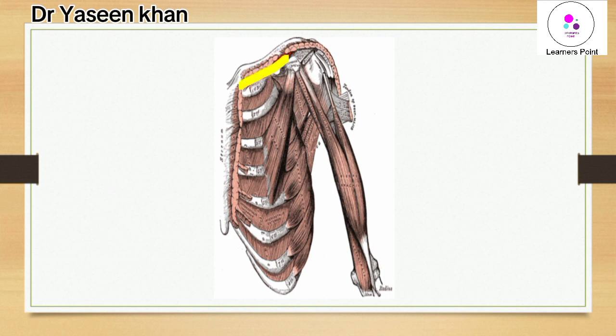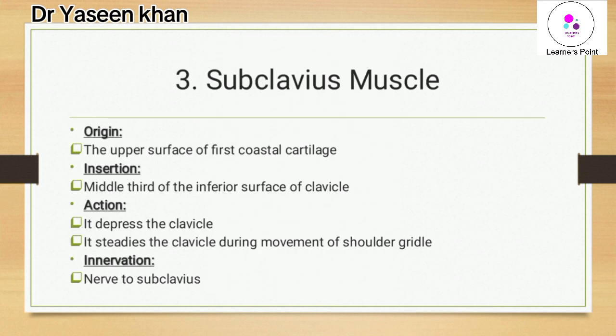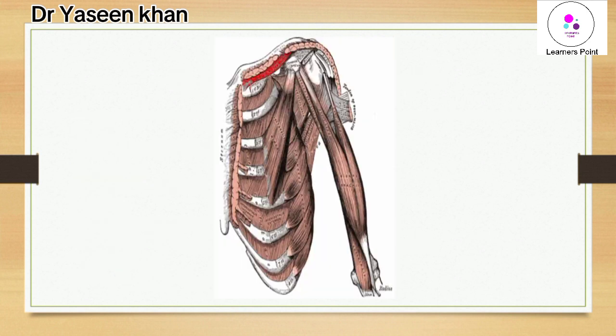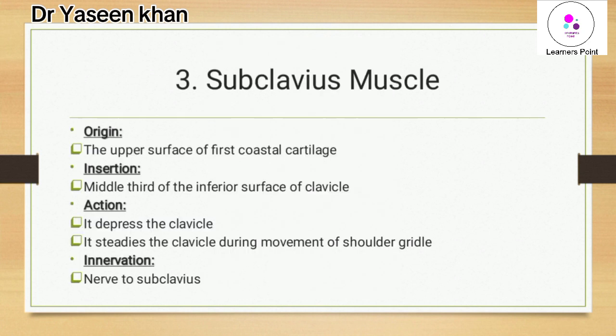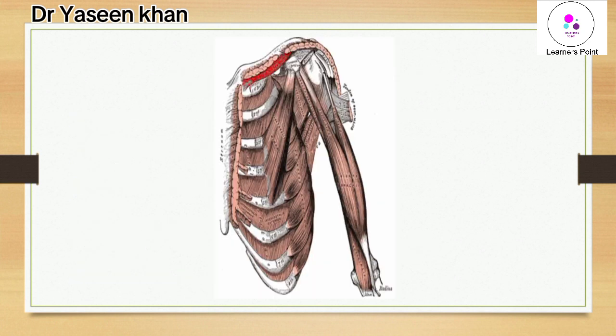This is the subclavius muscle. Here is the first rib, and the costal cartilage of the first rib. The origin of the subclavius is the upper surface of the first costal cartilage.